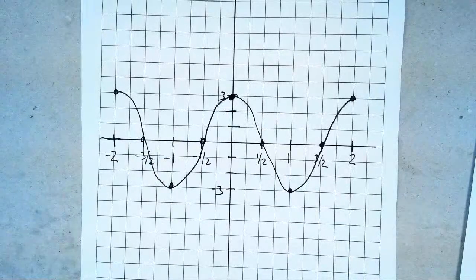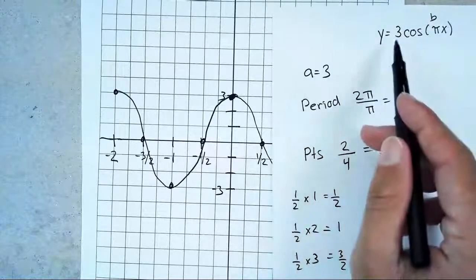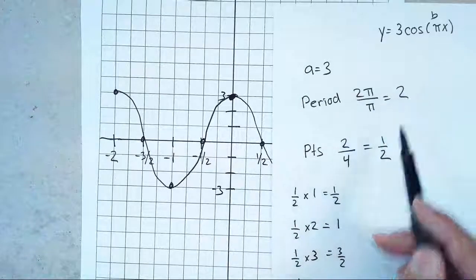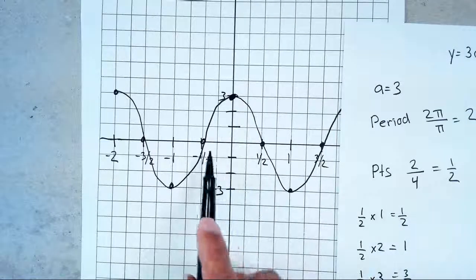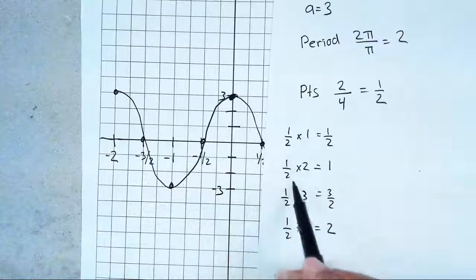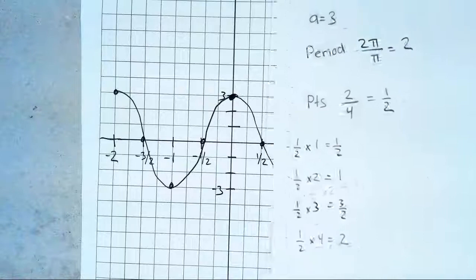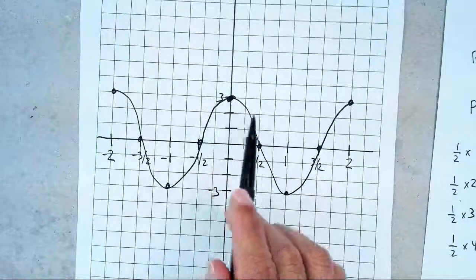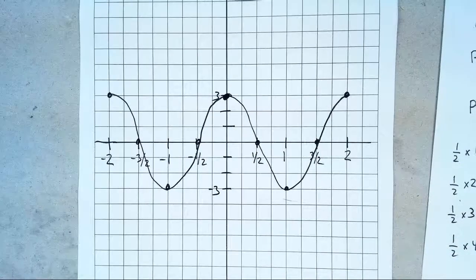To go through cosine again: A is the number in front. Period is 2π over B — 2π over π gives you 2. Find your points by dividing the period by 4 to get 4 equal spaces. Multiply by 1, 2, 3, 4 — remember, the last point always matches your period. Come to your graph: because your amplitude is 3, start at 3. It looks like a cup. That's the finished graph. Thanks for watching — hope this helped!